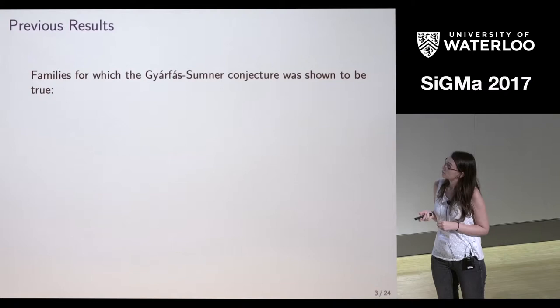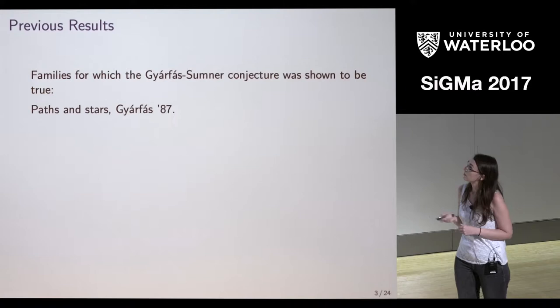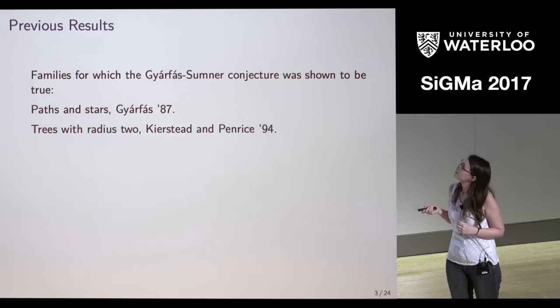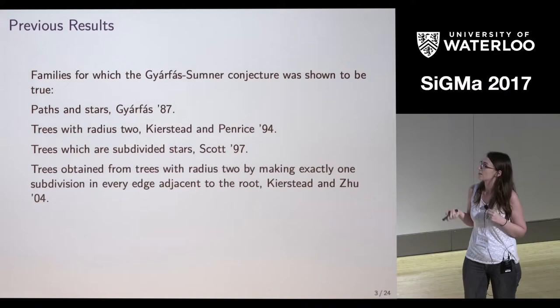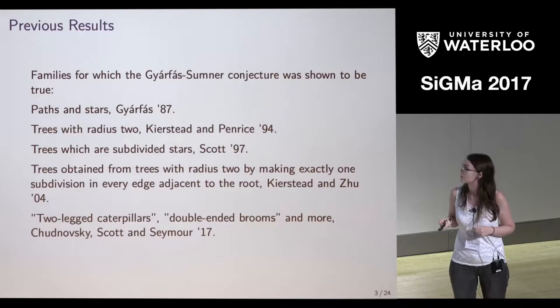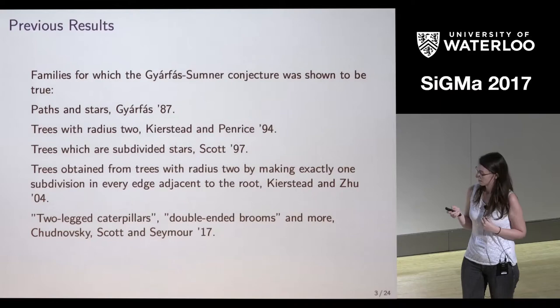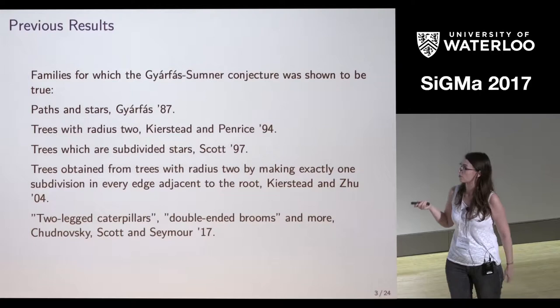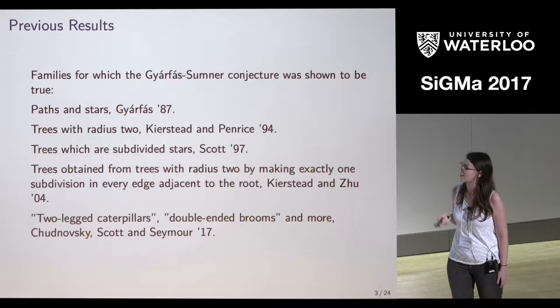There are a few families of trees for which the conjecture is known to be true. Gyárfás showed in the same paper — mentioned in the previous talk — that the conjecture is true for paths and stars, and the proof for paths was also sketched. There were additional results for trees of radius two, which are subdivided stars, and some other families, with continuing work by Chudnovsky, Scott, and Seymour. The proofs appear to be quite hard, and the bounds are usually high — the function is usually exponential or even larger.